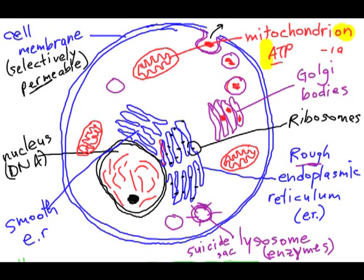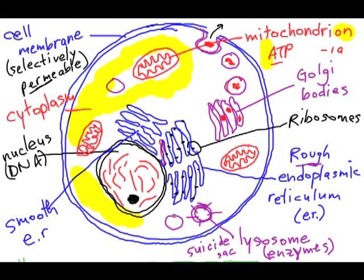Everything inside the cell surrounding all these organelles is the cytoplasm — that jelly-like substance found within both plant and animal cells.